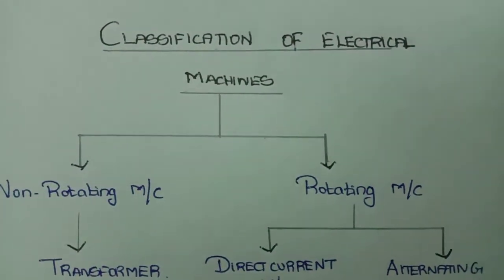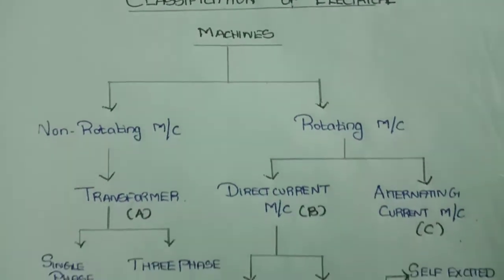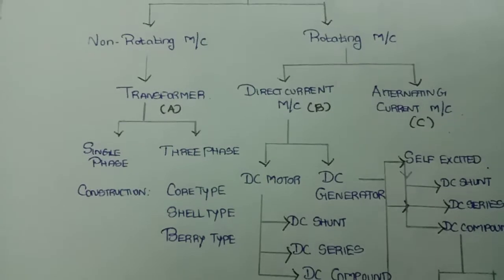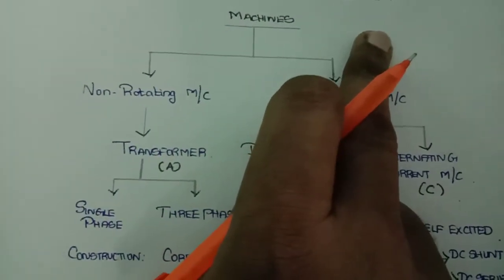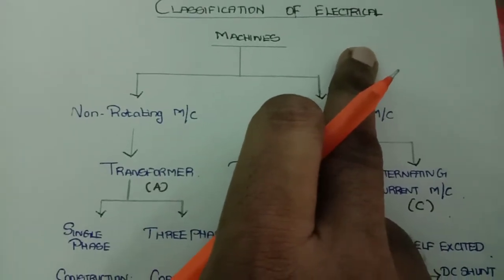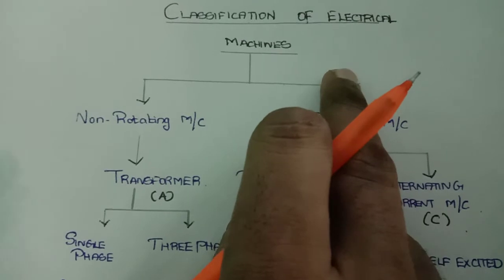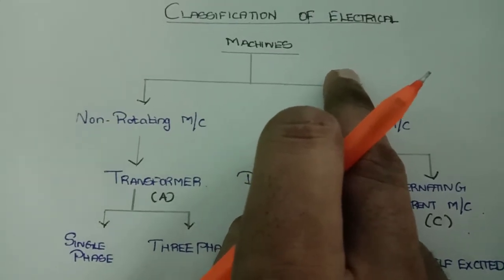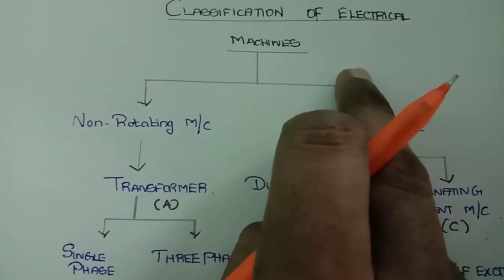Before going to the content of electrical machines, first I need to clarify what is an electrical machine and its classification. An electrical machine is a device which performs a task of converting one form of energy into electrical energy. Either mechanical energy is converted into electrical energy, or electrical energy is converted into mechanical energy.